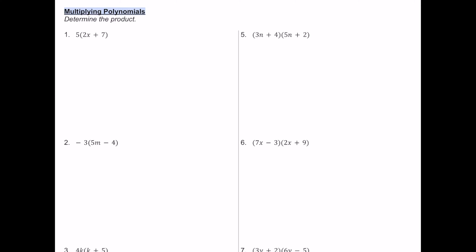In this video, let's talk about multiplying polynomials. For number one, we have a monomial of 5 multiplied by a binomial of 2x plus 7.